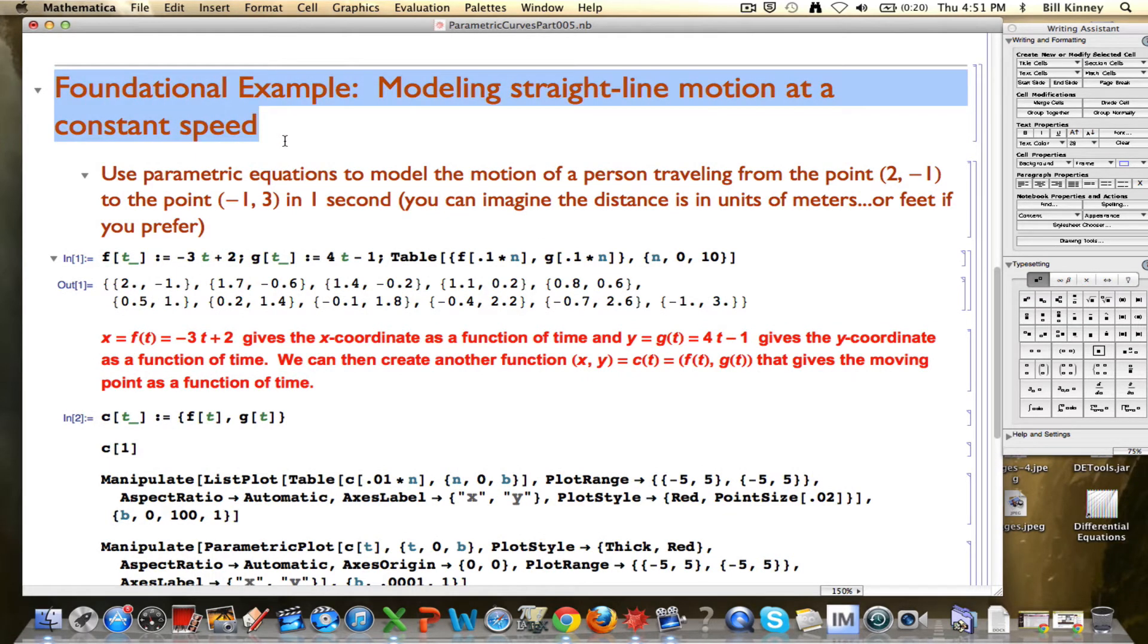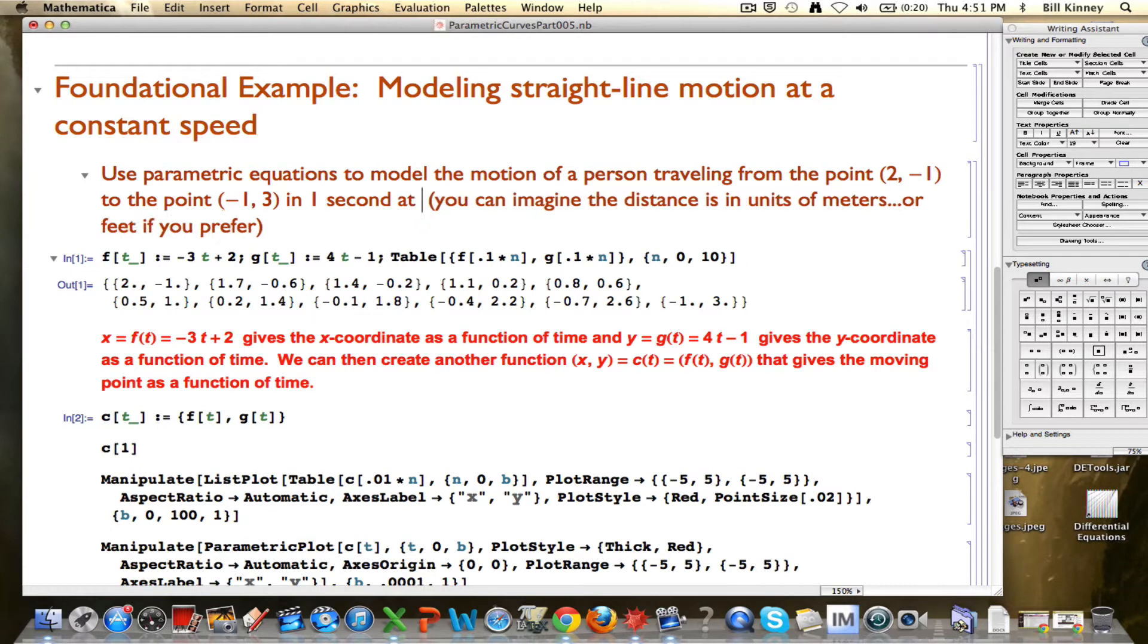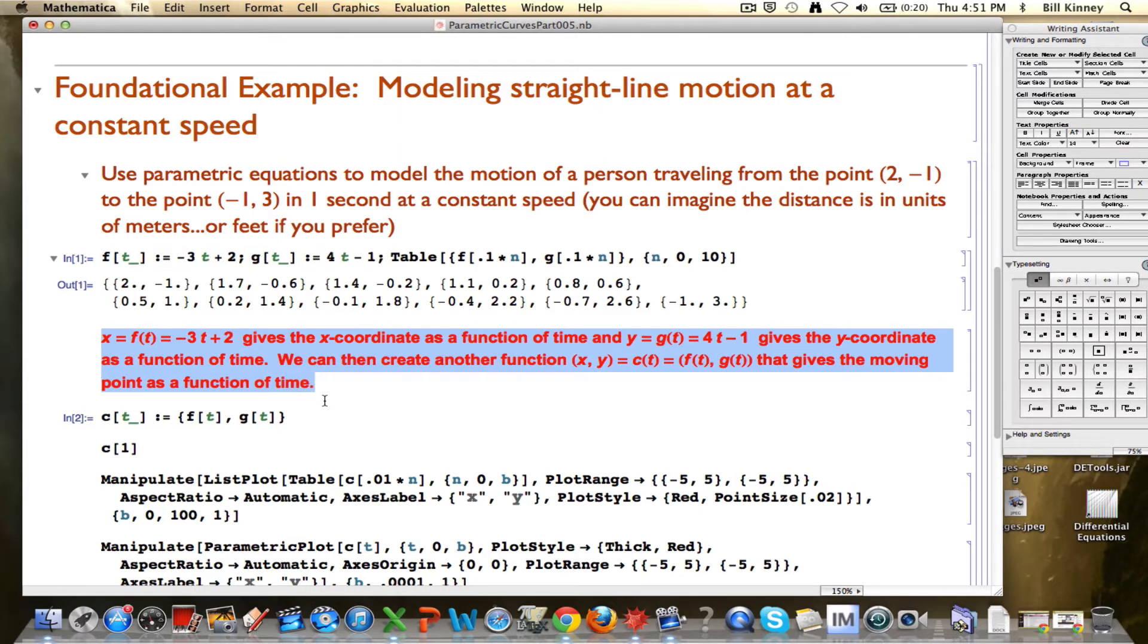I also want to emphasize some mathematical things. We've got our foundational example here, modeling straight line motion at a constant speed. We are modeling the motion of a person traveling between two points in one second. And what we saw is that these two linear functions, f of t equals negative 3t plus 2 and g of t equals 4t minus 1, are two nice ways of doing this modeling. They will give this constant motion starting at the first point when t equals 0 and ending at the right point when t is 1.